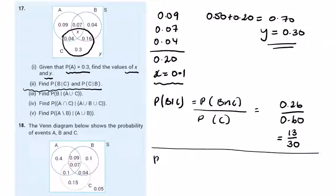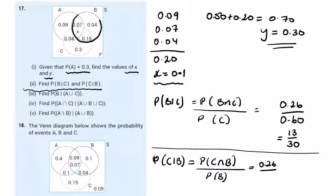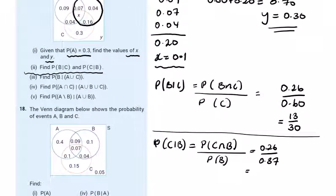For P(C|B): C intersection B and B intersection C are the same, but this time it's over the probability of B. So it's 0.26 over the probability of B. We have 4 and 16 which gives 20, and 10 is 30, and 37.